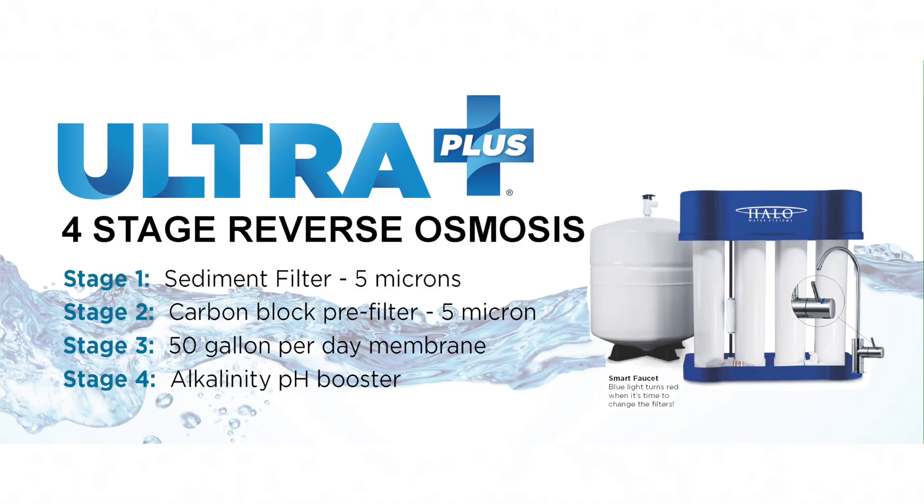The RO filter that we use is the Halo Ultra Plus — an outstanding unit. It's one of the least wasteful RO systems there are. It's a one-to-one system: it wastes one gallon of water to make one gallon. In the past we've had RO systems that use three gallons of water to make one gallon of clean water, or even six gallons to make one gallon. This is the biggest drawback to an RO — in order to get that completely clean water, it wastes some.